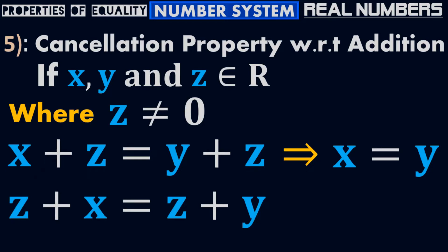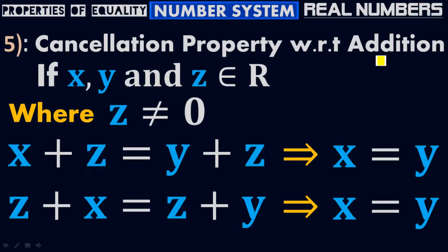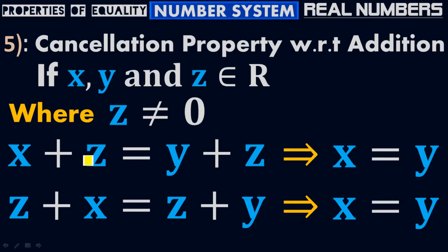Similarly, z plus x equals to z plus y, which implies that x equals to y. It's very clear from its name — cancellation — that we are dealing with something cancellation. If x, y, and z belong to real numbers where z is not equal to 0, then x plus z equals to y plus z, which implies x equals to y. We have cancelled these two z's because z exists on both sides. When you bring the z from the right side to the left side, it becomes negative z. So positive z and negative z cancel each other, and we are left only with x on the left side and y on the right side. Therefore, x equals to y.